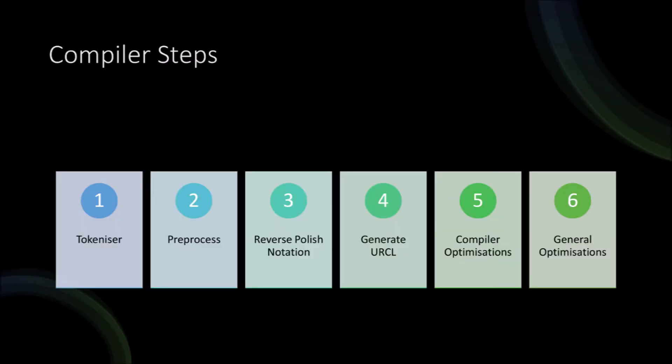There are six steps in the compilation process. First we have the tokenizer followed by the preprocess, then the reverse Polish notation, then we generate URCL followed by compiler optimizations, then finally general optimizations.